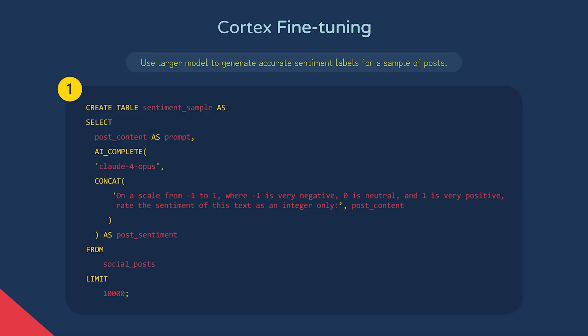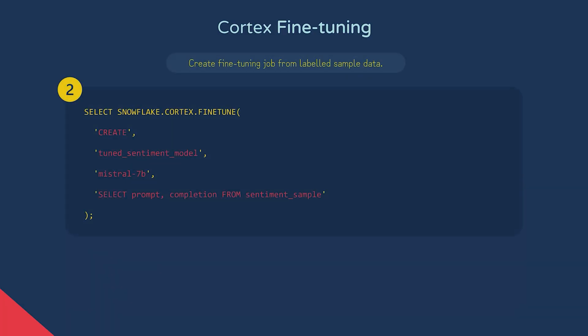Step one would be to use the larger model to generate accurate sentiment labels for a sample of posts. This code reads the social posts table and using the AI_COMPLETE function with a prompt to generate sentiment, will generate a new table of 10,000 rows with sentiment calculated. Step two would be to create a fine-tuning job. The fine-tune function allows you to create and manage LLMs customized for a specific task. To create a job, we pass in the name of the output model, the base model to fine-tune, and a training data query — this is how we select the labelled posts created in the previous step.